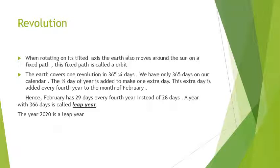We all know that we have 365 days in a year, but actually the earth completes one revolution in 365 and one-fourth days. We have only 365 days in our calendar, so where does this one-fourth day go? Every year, one-fourth day is added, and after four years — by adding one-fourth plus one-fourth plus one-fourth plus one-fourth — that makes one extra day in a year.